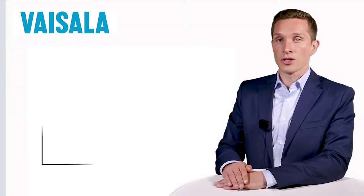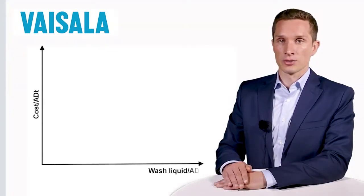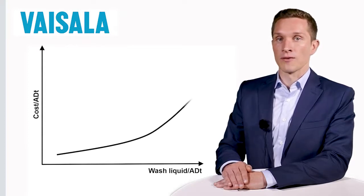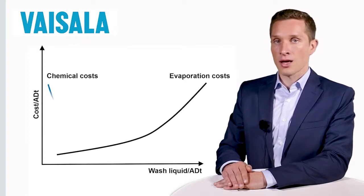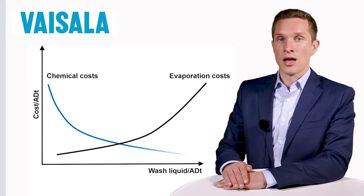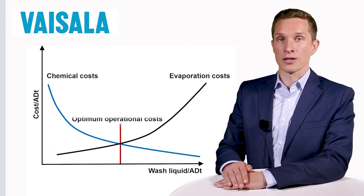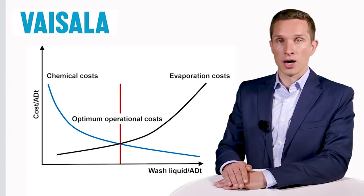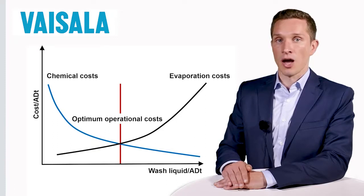Contradictory? Yes it is. The washing operation is a compromise. It is a trade-off between the evaporation costs and the chemical costs, and the aim of the operation is to find the right balance between these two factors. By optimizing the line operation, the mill guarantees the best economic and environmental performance.